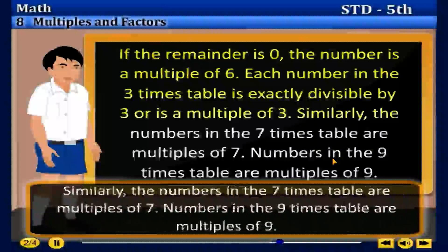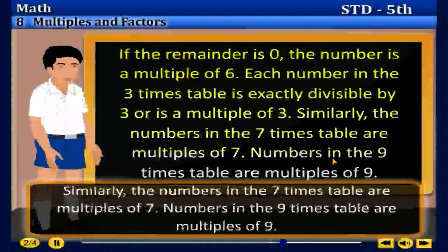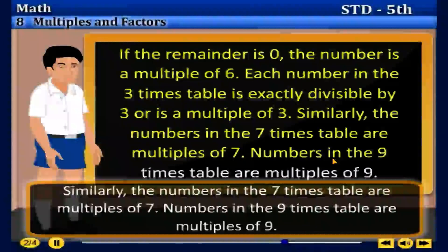Similarly, the numbers in the 7 times table are multiples of 7. Numbers in the 9 times table are multiples of 9.